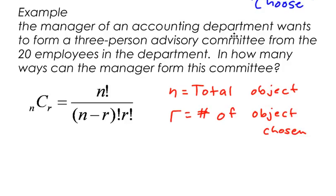The manager of an accounting department wants to form a three-person advisory committee from the 20 employees in the department. In how many ways can the manager form this committee? There's the key word, how many ways.